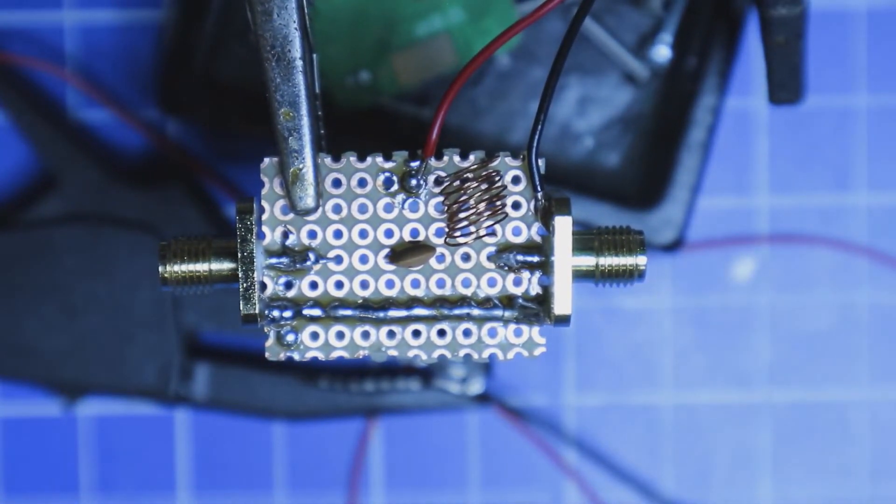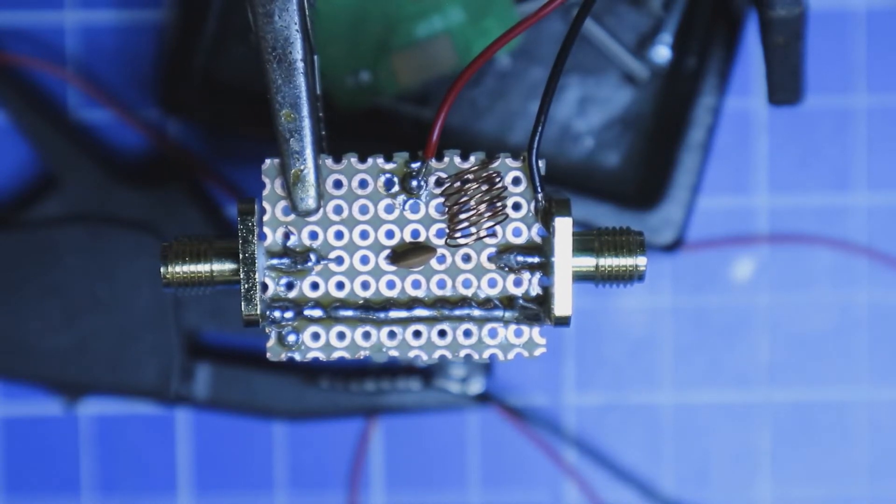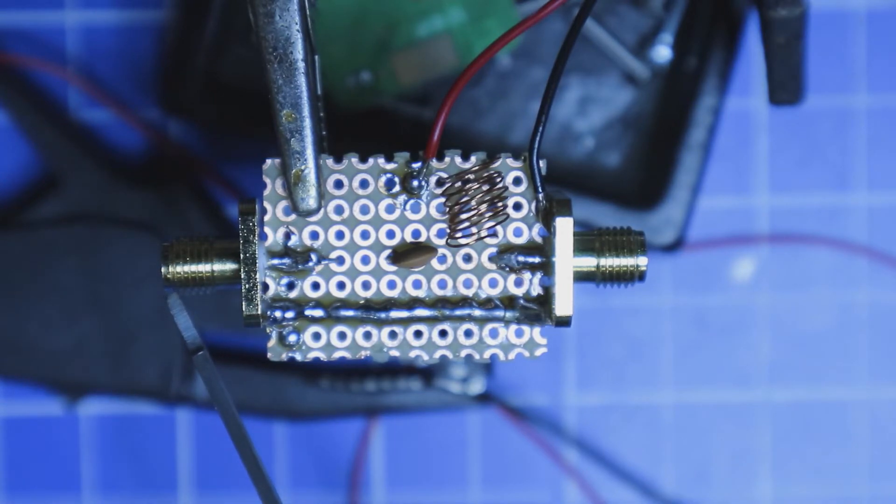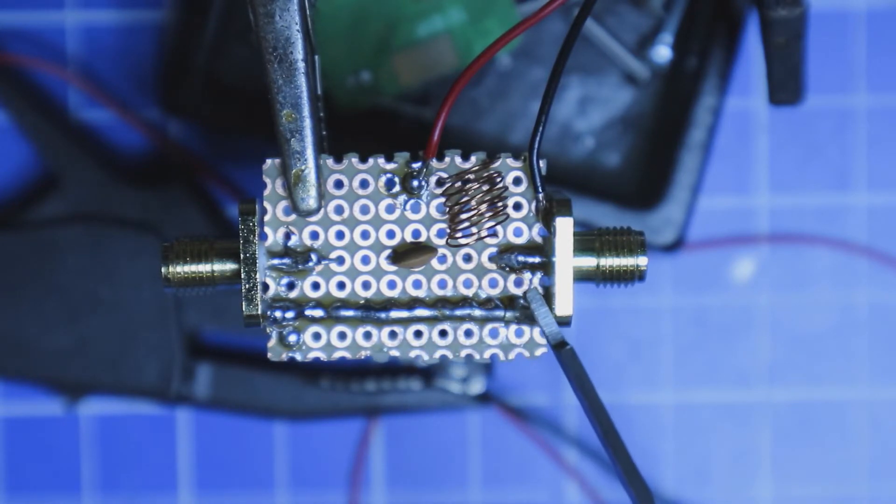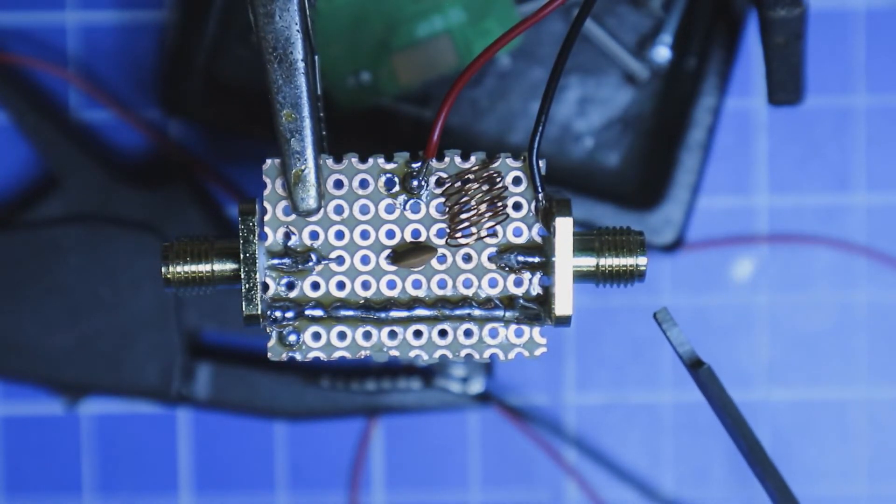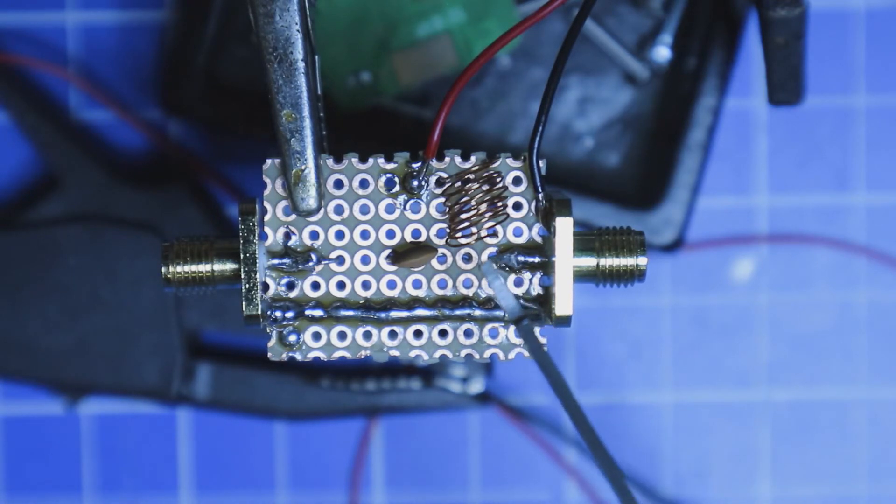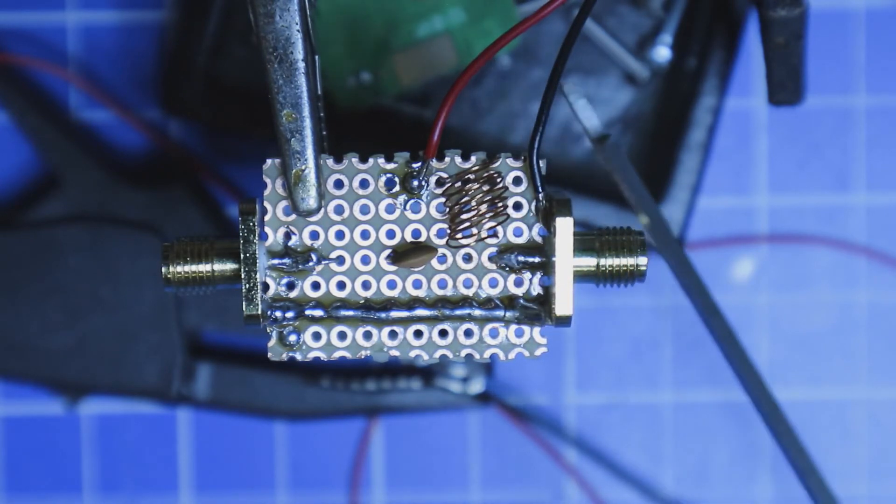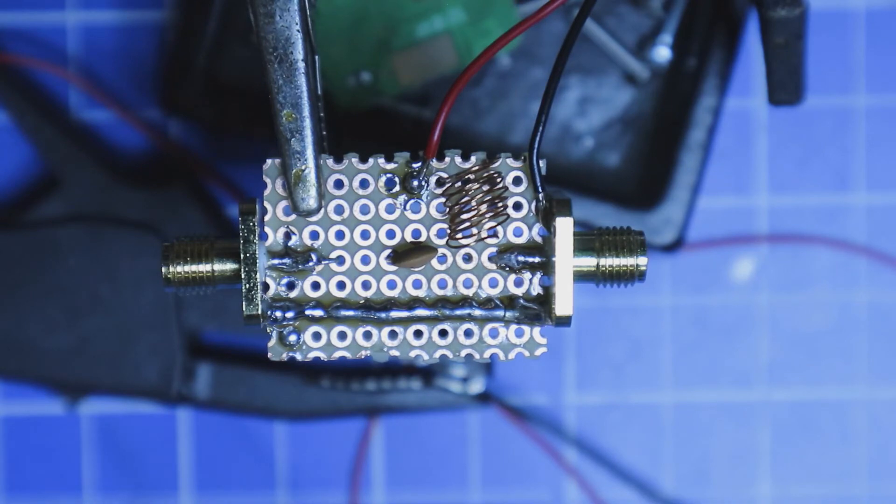The basic function of a BIAS-T is, as I said, it should block the DC voltage from going back into our receiver on this side. And this part is done by the capacitor. It should forward the DC voltage on the output connector. This part is done over the coil and also the coil protects that there is no RF going into the DC leads where we feed in our DC voltage.